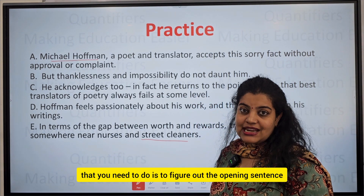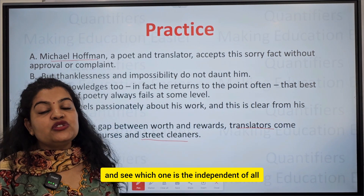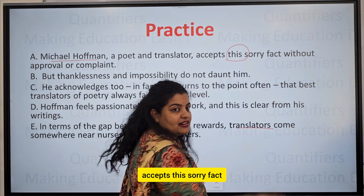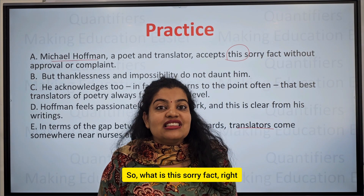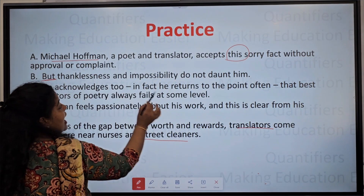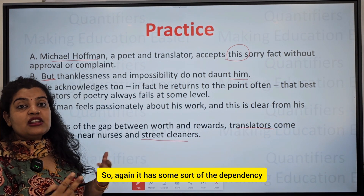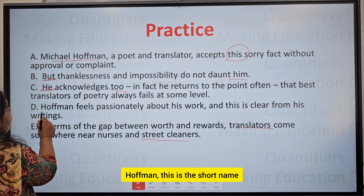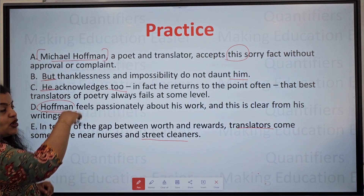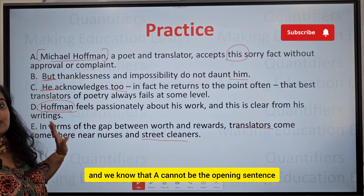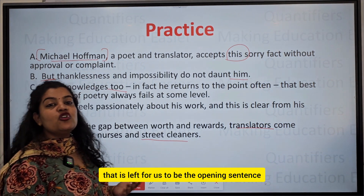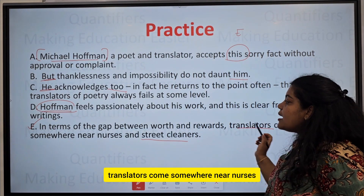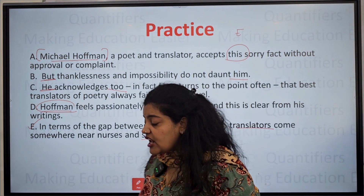Now let's figure out the opening sentence by analyzing which one is independent. 'Michel Hoffman, appointing a translator, accepts this sorry fact' — this has dependency on 'this sorry fact.' 'But thanklessness and impossibility do not stop him' — also has dependency. 'He acknowledges too' — 'he' refers to Hoffman, a short form, so this will follow the full name. The only option left for the opening sentence is sentence E: 'In terms of the gap between worth and rewards, translators come somewhere near nurses and street cleaners.'